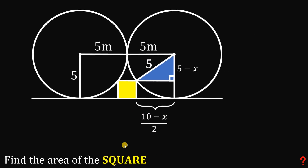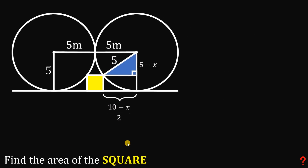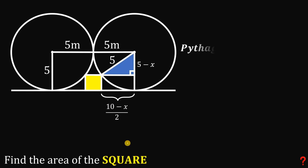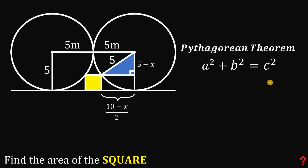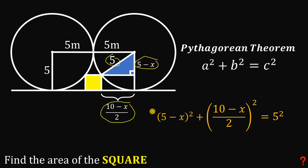Now we can use the Pythagorean theorem: a² + b² = c². With a = (5 − x), b = (10 − x)/2, and hypotenuse c = 5, we get: (5 − x)² + [(10 − x)/2]² = 5².